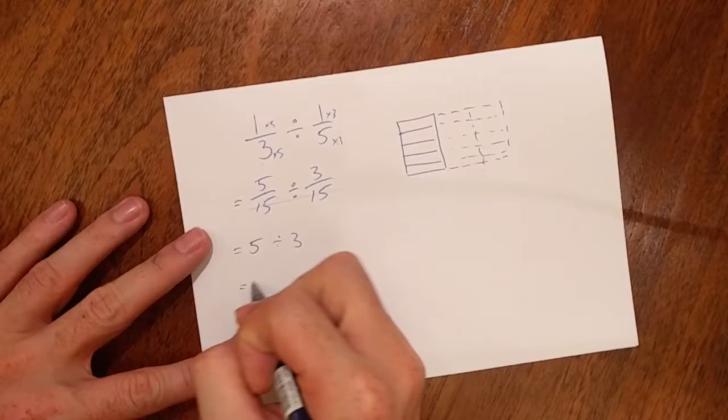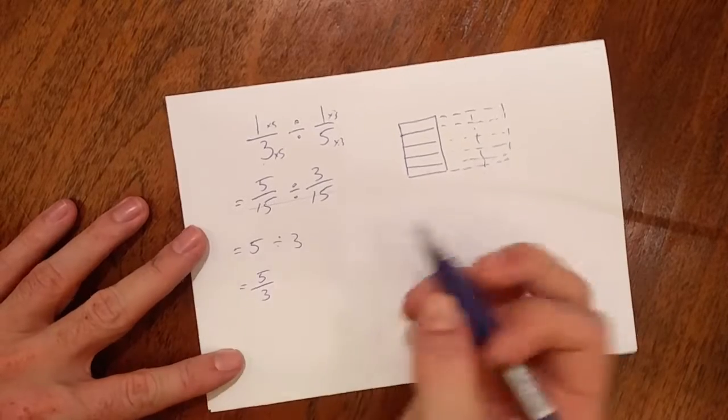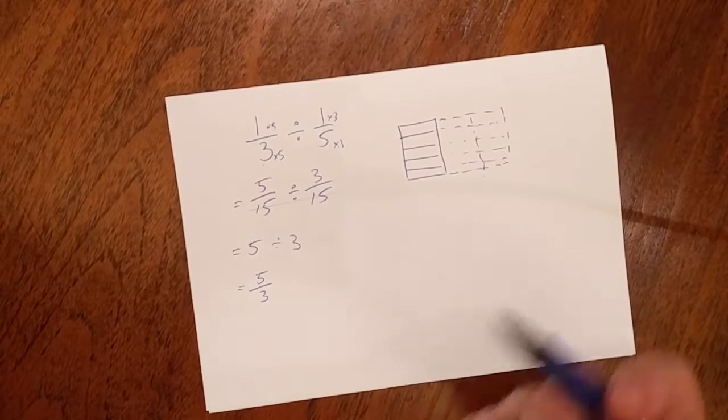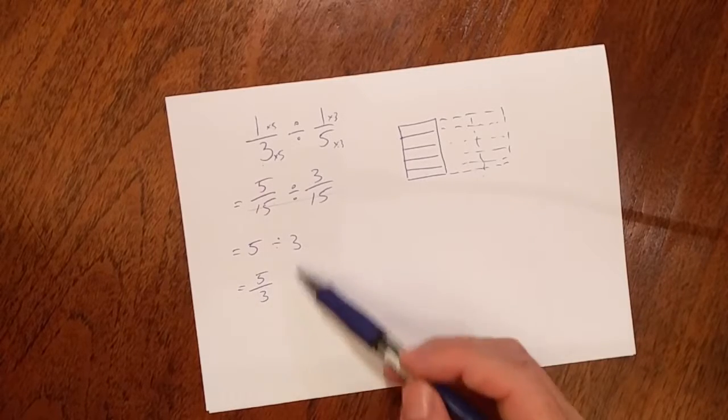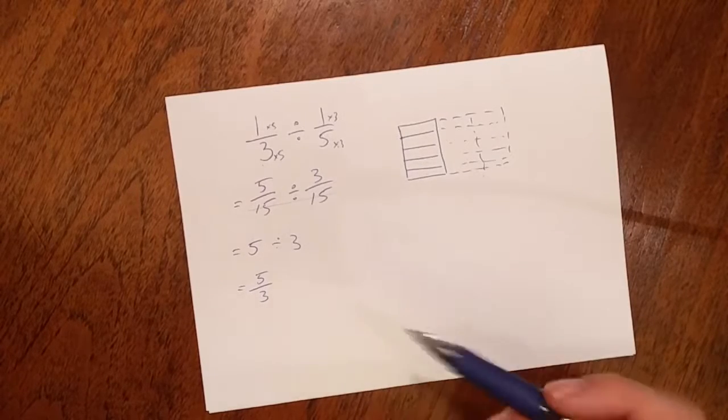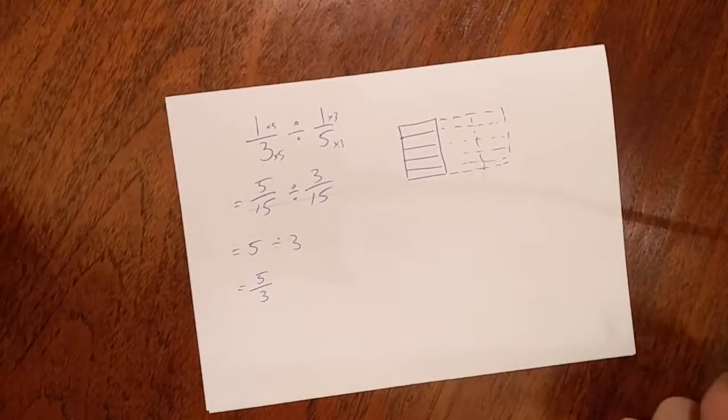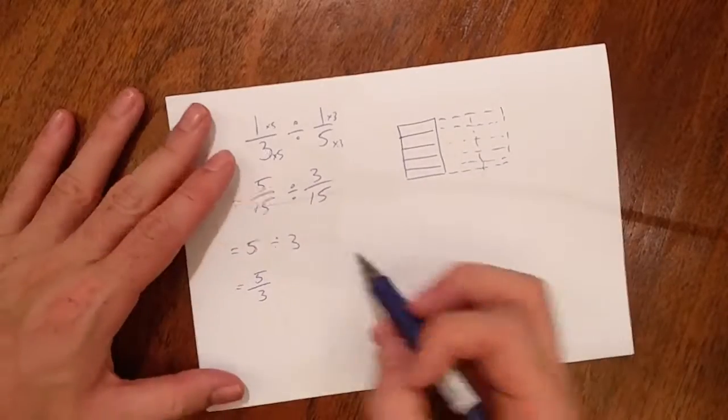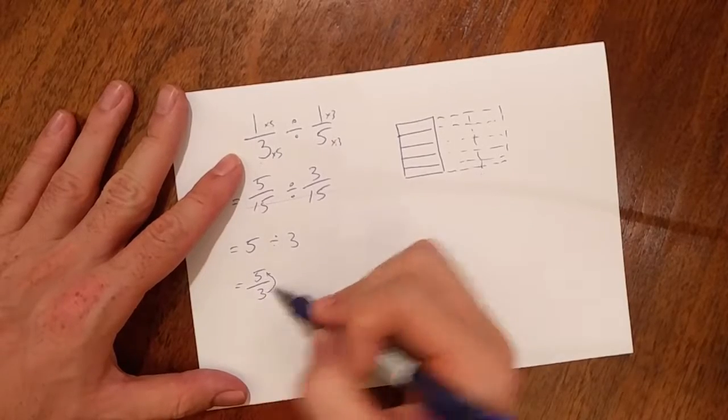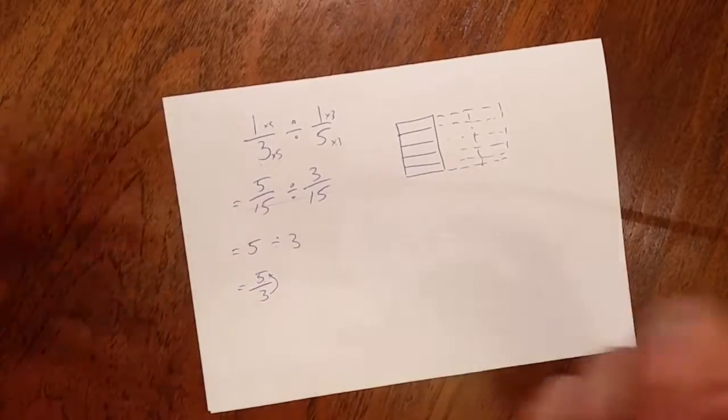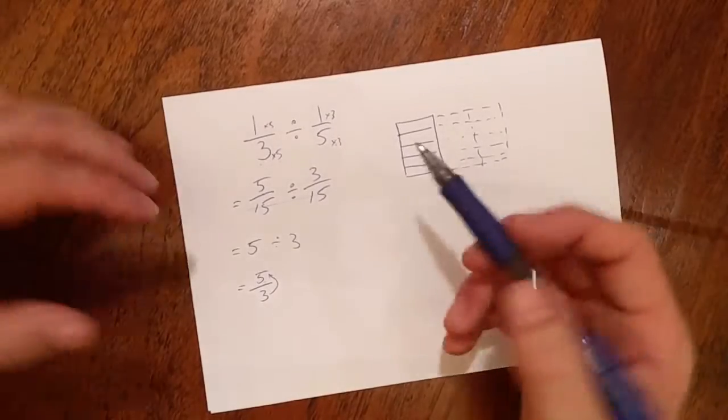When we have this one, it's always great to rewrite our division as a fraction. Moving forwards, most of the time you should want to write your division as a fraction because it's conceptually just makes a little bit more sense. What this is saying is how many threes go into five, or five is split up into groups of three, or five is shared amongst three equal groups. Most of the time we're looking at groups of three.